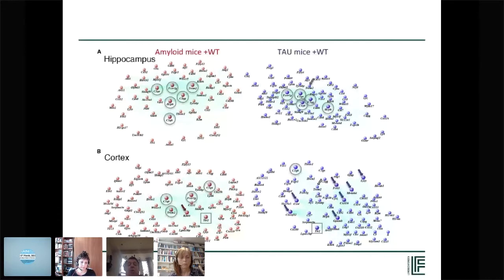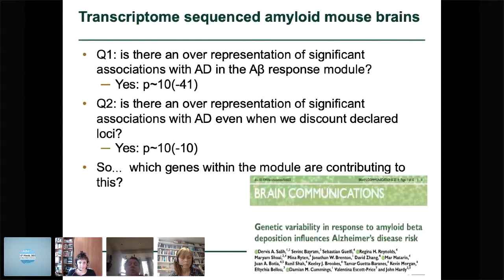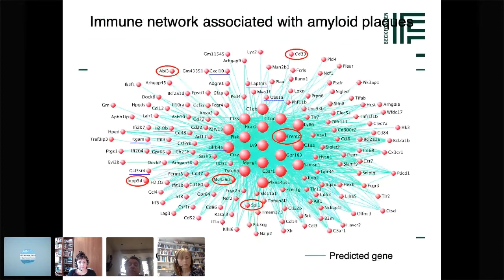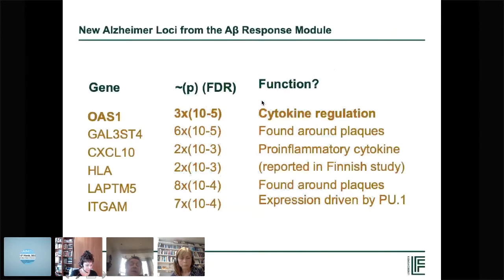This is our data from 2014, showing in the top left panel all the genes which responded to amyloid deposition. These other five genes had also been reported as microglial genes involved in the risk of Alzheimer's disease. This is where bioinformatics is beginning to tell us genes — we can see a network of amyloid-responsive genes which are genetically associated with Alzheimer's disease. Dervis Saleh with Valentina Escort-Price asked: is there an over-representation of significant associations with amyloid response? Yes. Is that over-representation still there even accounting for already known loci? Still yes. The result is the amyloid response module, with TREM2 at the centre — allowing us to declare statistically that additional genes were also Alzheimer's risk genes. Many of them had previously been implicated in amyloid response by pathological investigations. I'll come back to OAS at the very end.